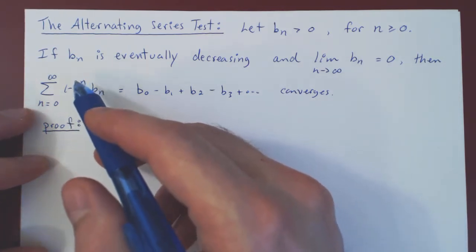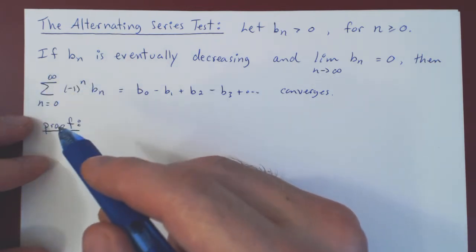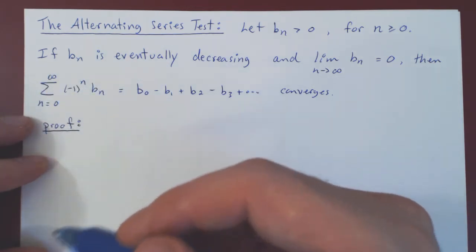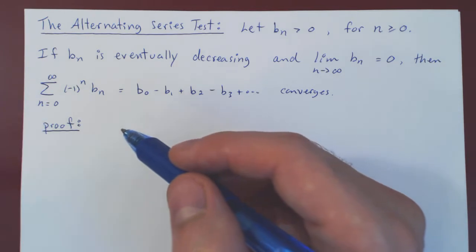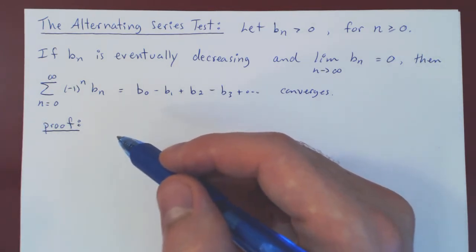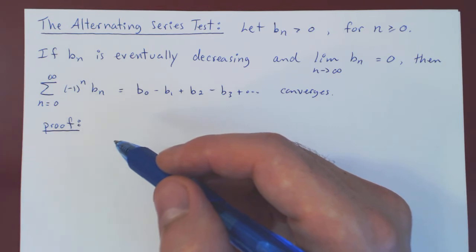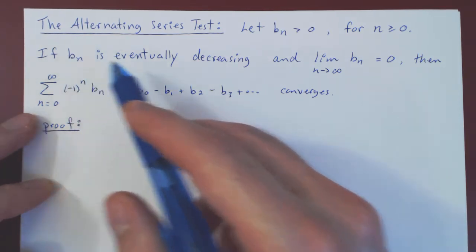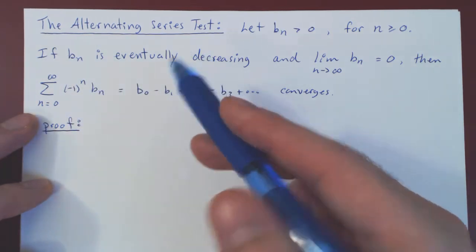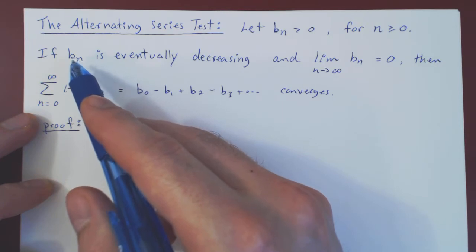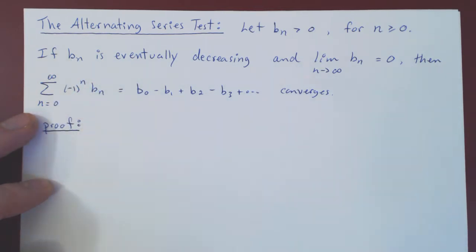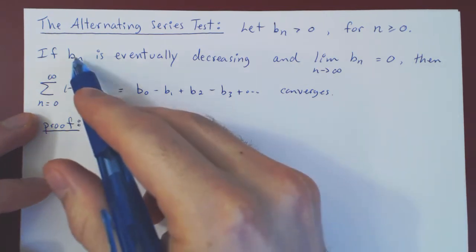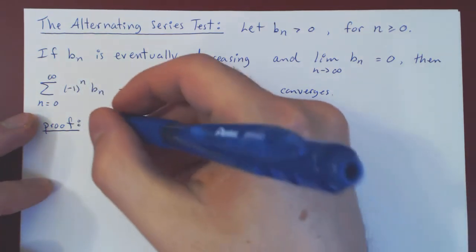To prove this result, we cannot attack the series directly. We will look at the sequence of its partial sums, and we'll break this up into two cases: the partial sums when we're summing an even number of terms, and the partial sums when we're summing an odd number of terms. We will also assume that Bn is decreasing from the beginning. As always, we can always ignore the first few terms of the series, and this does not affect convergence. So to simplify the argument, we will assume that Bn is decreasing from the beginning.